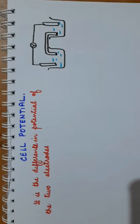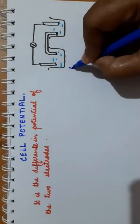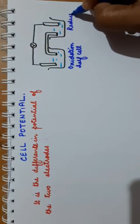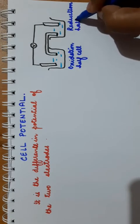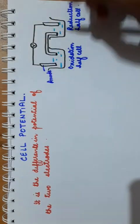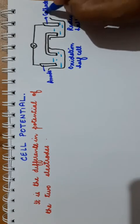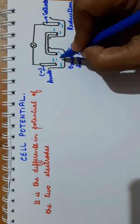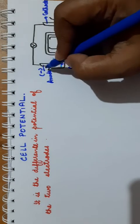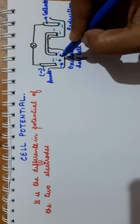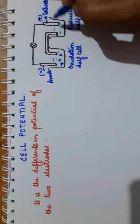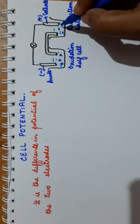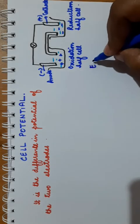During the construction of the galvanic cell you have learned that there are two half cells in it. One is known as oxidation half cell and another one is known as reduction half cell. The half cell in which oxidation occurs is known as anode, and the rod in the reduction half cell is known as cathode. This anode acquires negative polarity as compared to the solution. That means in the oxidation half cell the solution is positively charged and the anode is negatively charged, so there is a potential difference between the rod and the electrolyte. In the reduction half cell, cathode is positively charged and solution is negatively charged, so there is a potential difference. That potential difference created in each half cell is known as electrode potential, and we have represented it by E.